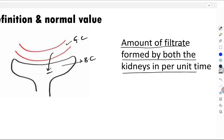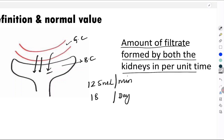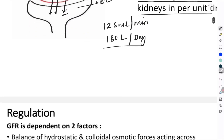The normal value is 125 ml of ultrafiltrate formed each minute, and if written per day this value comes to 180 liters per day. So this is the normal value and the definition of GFR.